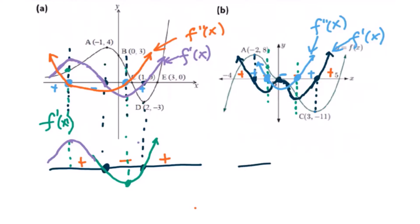If you are given the sign diagram — for example, I have one: positive, negative, positive, negative, here is negative — you have to know how to draw the graph. For positive, you just connect these two. Negative, go down. Positive, go up. Negative, go this way, and then here is going down. That's how you draw the graph if you know the sign diagram.